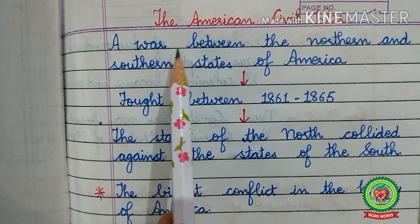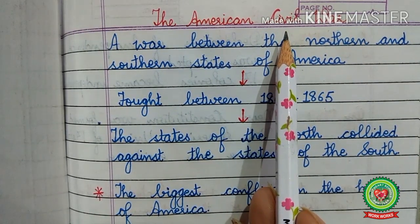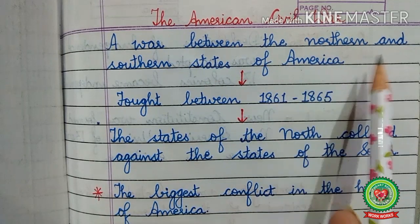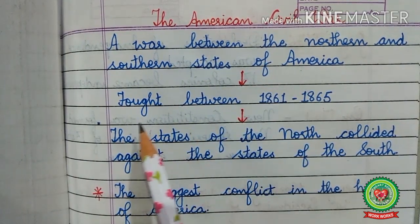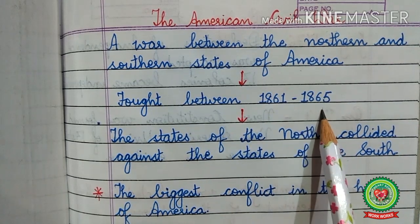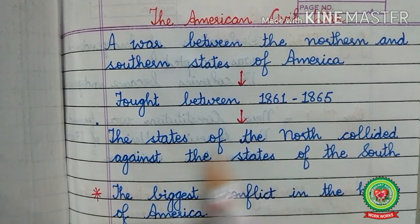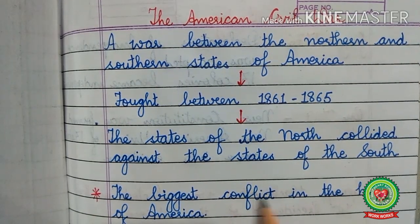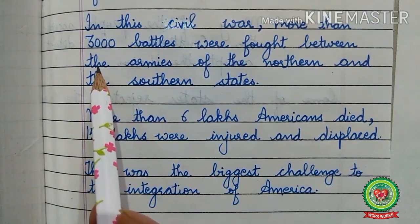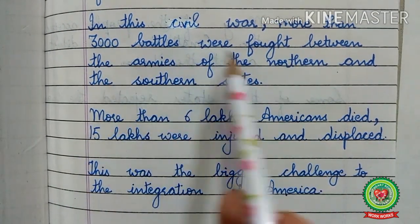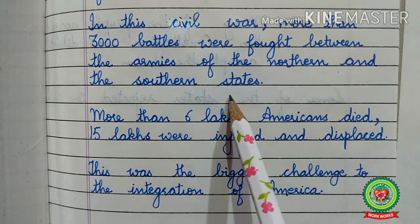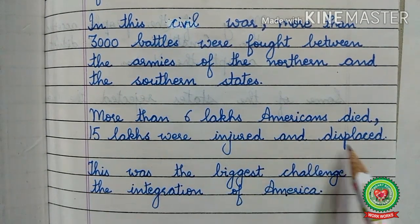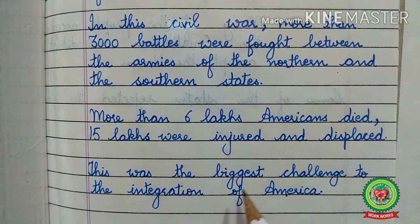The first question: what is the American Civil War? A Civil War is also called the war between the states of a country, and this war was between the Northern and the Southern states of America. It was fought between 1861 and 1865. The states of the North collided against the states of the South, and it was the biggest conflict in the history of America. More than 3,000 battles were fought, more than 6 lakh Americans died, and about 15 lakh were injured and displaced.